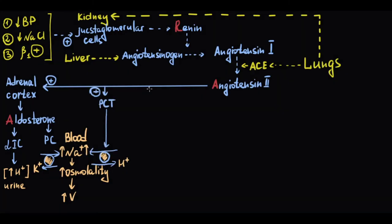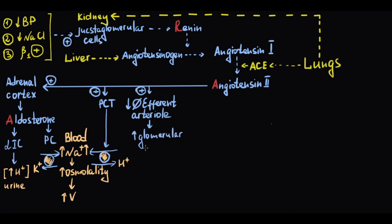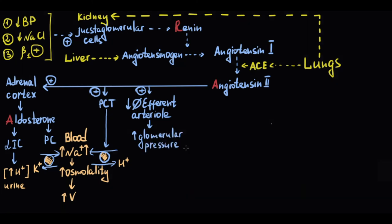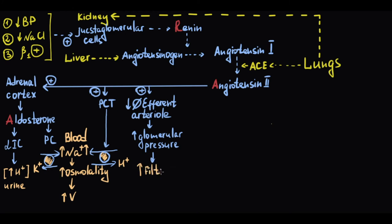Angiotensin-2 also constricts the efferent arteriole in the glomerulus, increasing pressure inside the glomerulus and thereby increasing glomerular filtration.